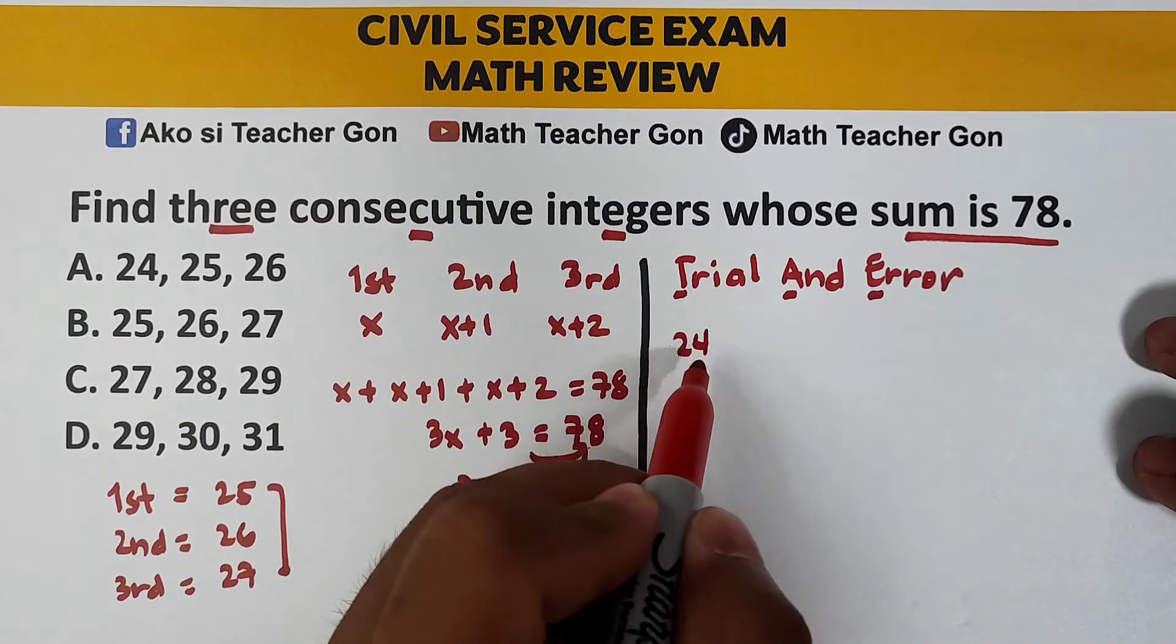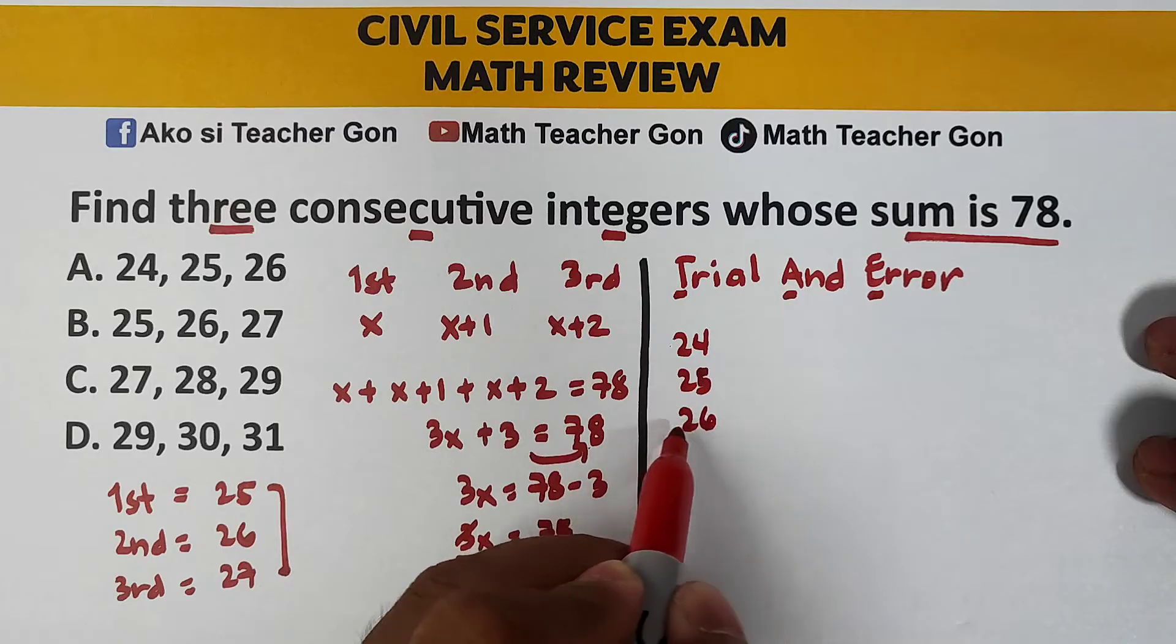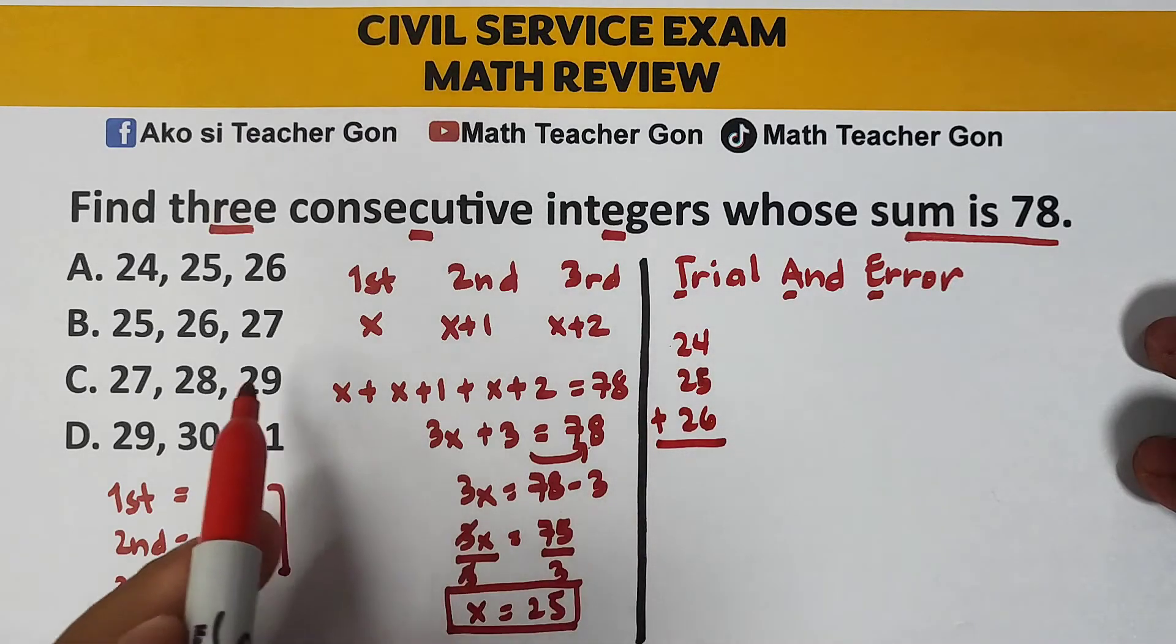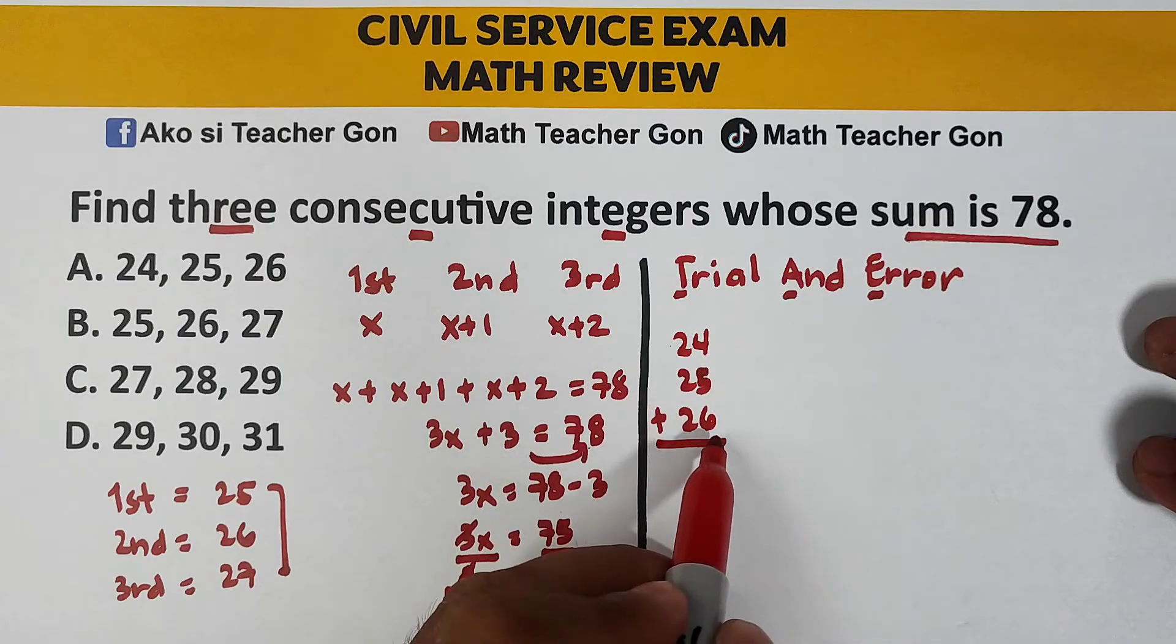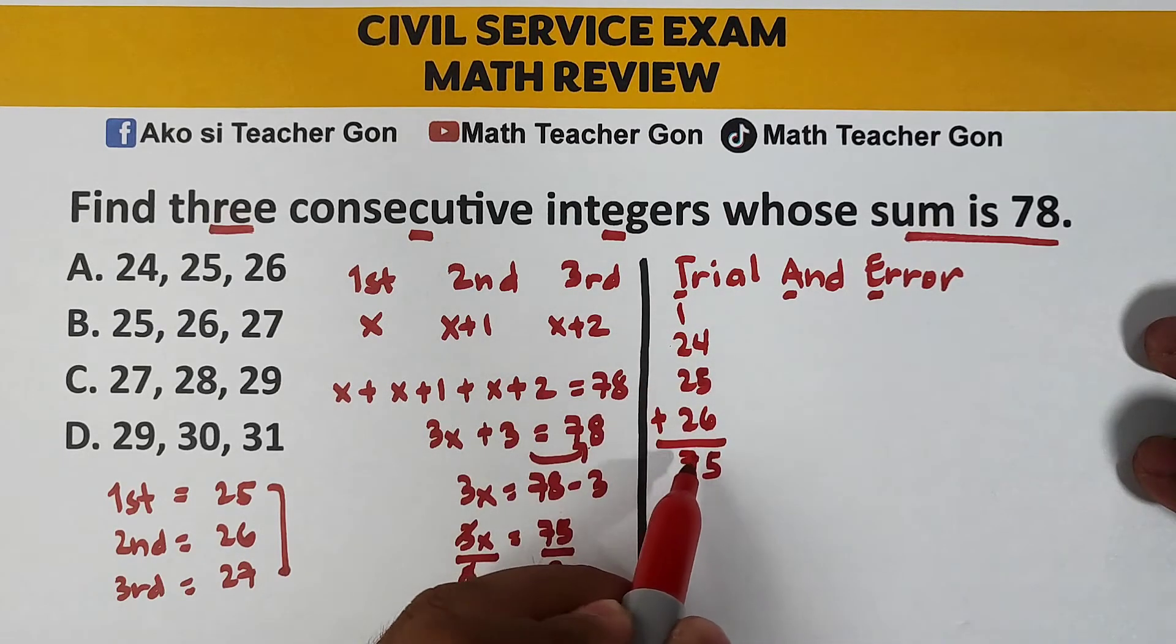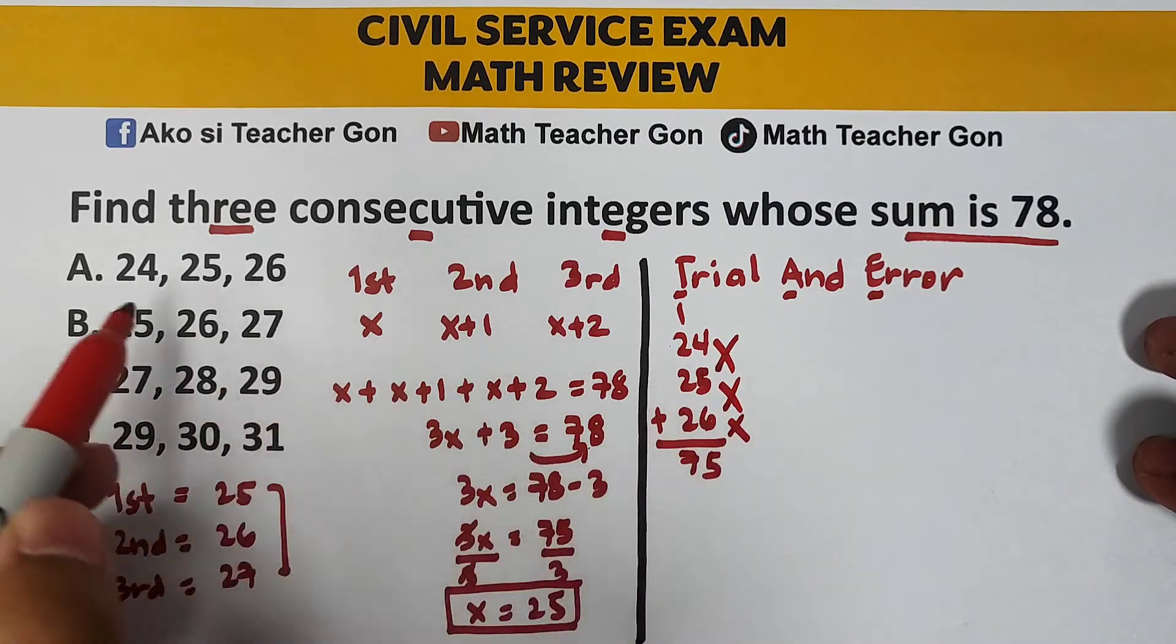we have 24 plus 25 plus 26, try natin if mapag-came up tayo with 78. 4 plus 5 is 9, plus 6 is 15, carry 1, and this is only 75. So, hindi pwede itong numbers ito. So, hindi pwede yung letter A.